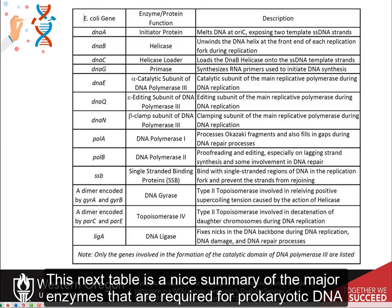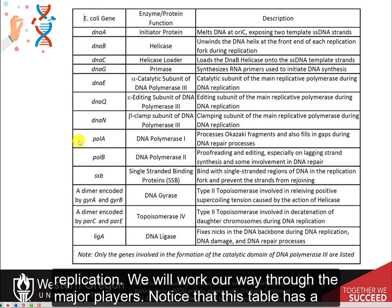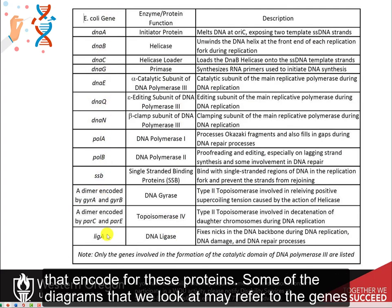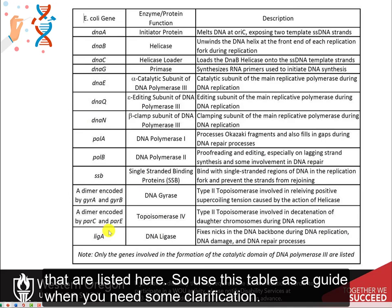This next table is a nice summary of the major enzymes that are required for prokaryotic DNA replication. We will work our way through the major players. Notice that this table has a column where the enzymes are listed, as well as the gene names in E. coli that encode for these proteins. Some of the diagrams that we look at may refer to the genes listed here, so use this table as a guide when you need some clarification.